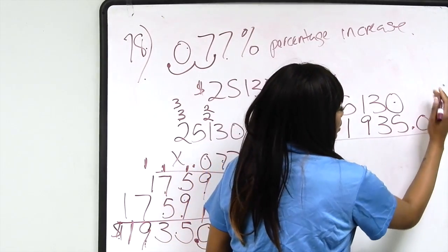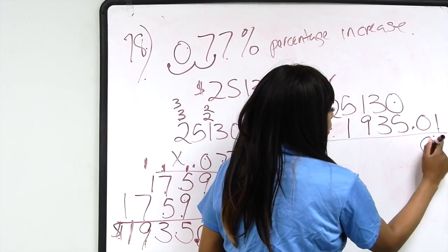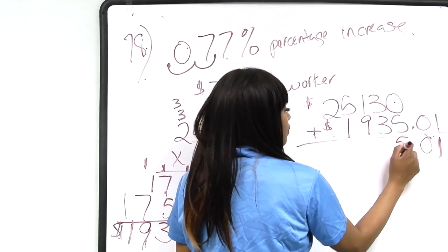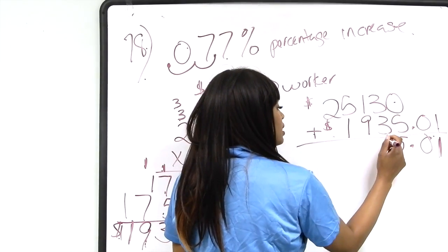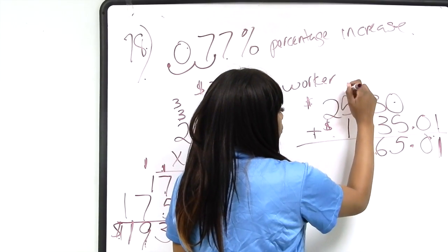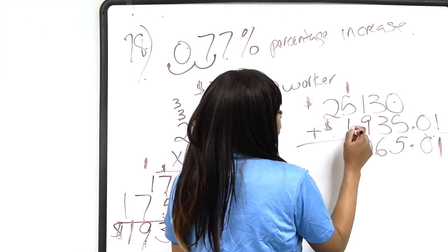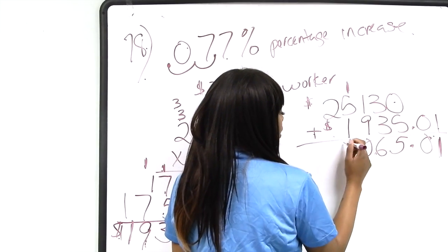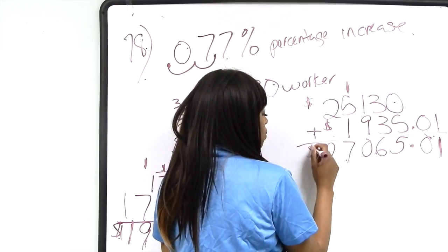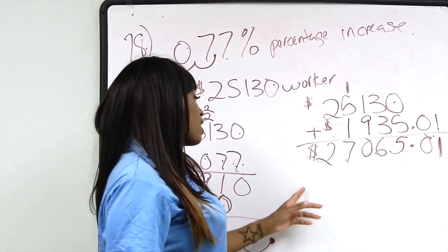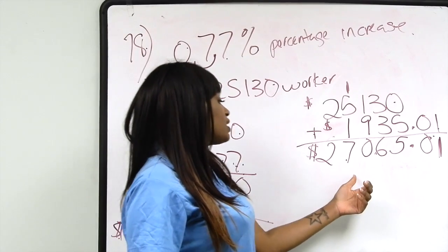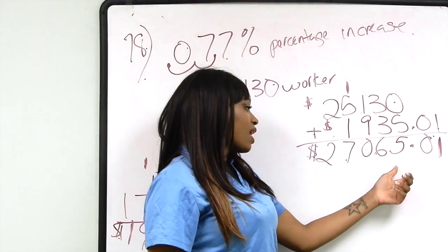Nothing plus 1 is 1. Nothing plus 0 is 0. 0 plus 5 is going to give you 5. 3 plus 3 is 6. 9 plus 1 is 10. You bring down the 0 and carry the 1 one place to the left. 5 plus 1 is 6, plus 1 more is 7. And then 2 plus nothing is 2. So the total salary, the total new salary of the current worker is $27,065.01.